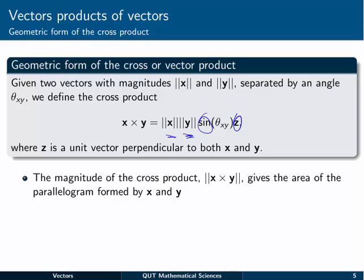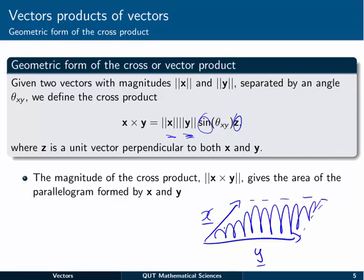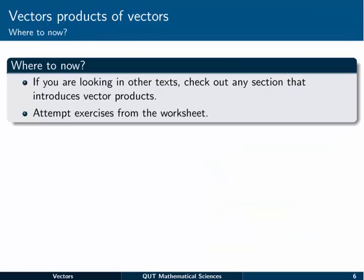The magnitude of the cross product, x crossed with y, actually gives us the area of a parallelogram formed by an x vector and a y vector. So sometimes that also comes in handy. You can imagine trying to figure out the space inside this area here. You can just do that with the magnitude of the cross product of the two vectors.